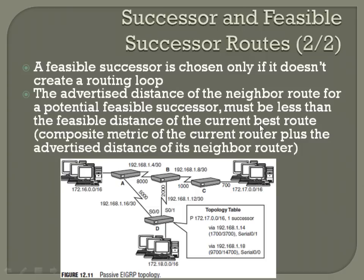The composite metric is the current router plus the advertised distance of the neighbor router — that's a lot of terms that if you're not familiar with, gets very confusing very fast. What it's saying is: we know our successor — the primary best route — for the 172.17 network from Router D is to traverse from D to B to C. It's got a feasible distance of 3700, which is the value you'll actually have to traverse, and an advertised distance from B of 1700.